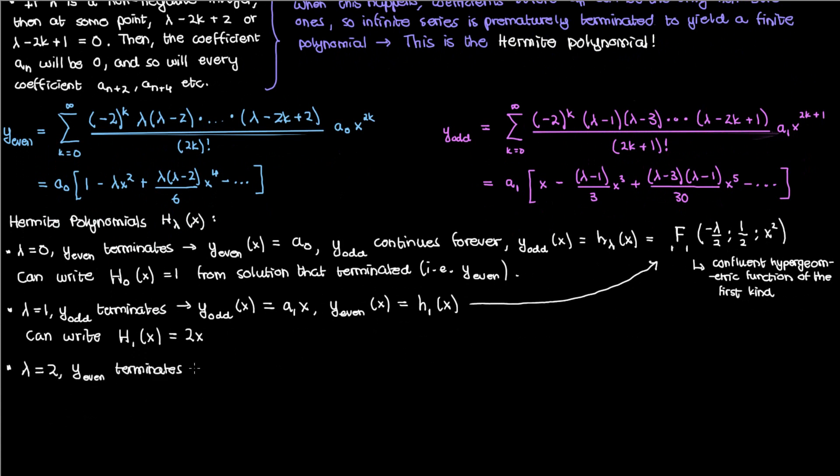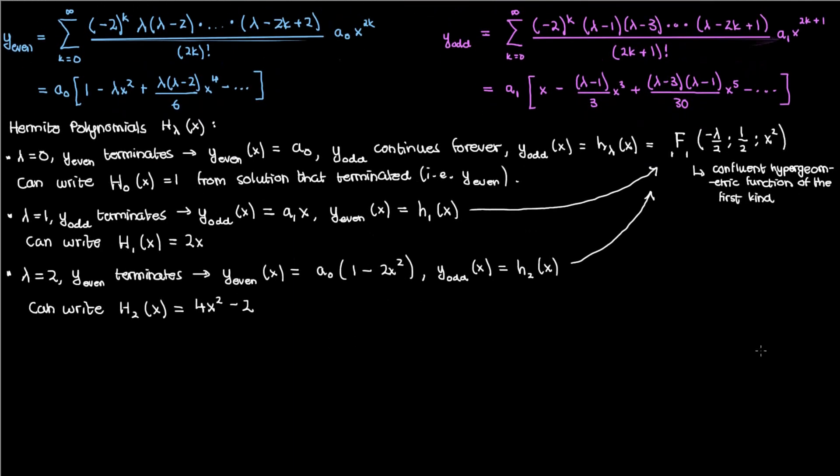Similarly for λ equals 2, y_even terminates giving us a_0 times (1-2x²). Meanwhile y_odd continues forever, and we have the confluent hypergeometric function for a λ of 2. The second degree Hermite polynomial is found from y_even by setting a_0 to -2, giving us an H_2 of 4x²-2.